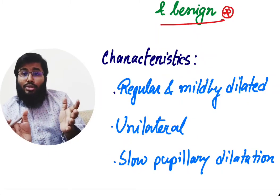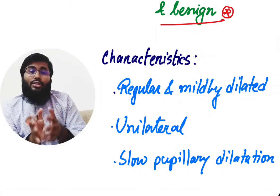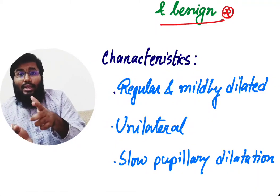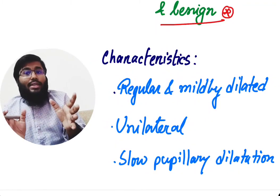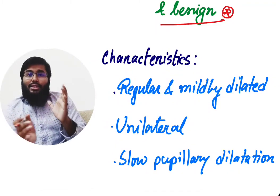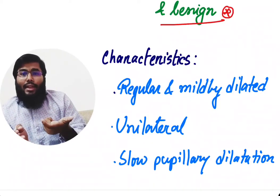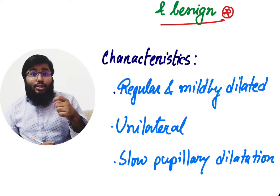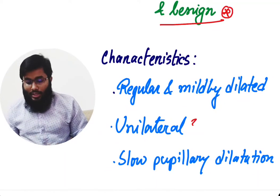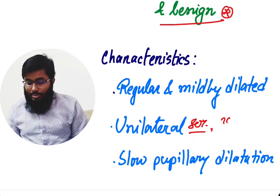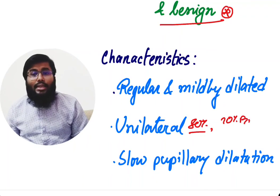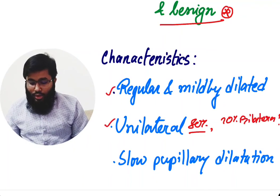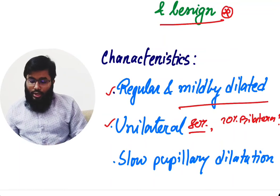If there is damage in the midbrain or in the pretectal nucleus, it may cause damage on both sides. If there is damage at the level of the Edinger-Westphal nucleus, it may cause bilateral damage. But with ciliary ganglion damage, it is usually unilateral — in 80% of cases — and in 20% of cases it may be bilateral.